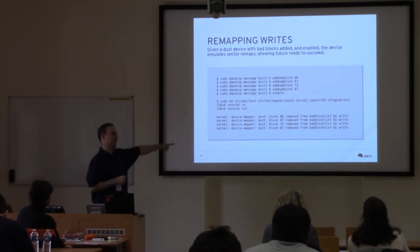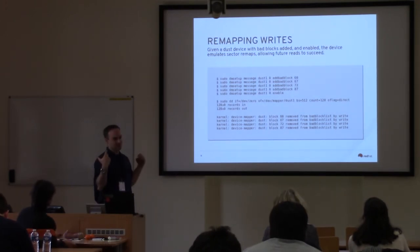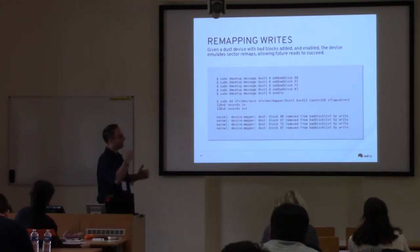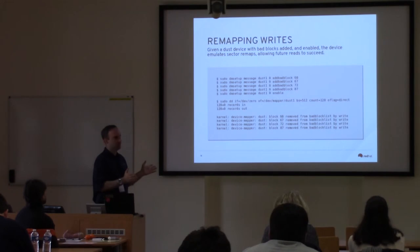With this message you can see exactly when and which block is removed. This can be disabled with a quiet switch, because there's a case where you could have many blocks and don't want spam in your log. So you can quiet down that message and do large tests with thousands of blocks in the bad block list.